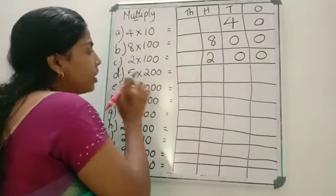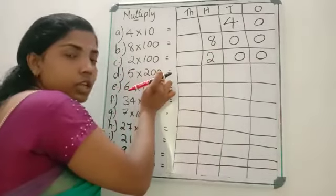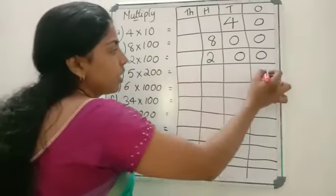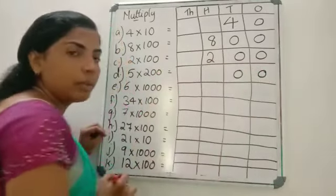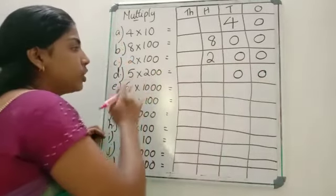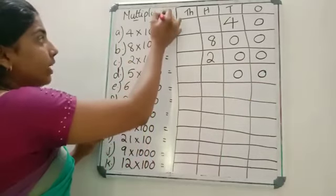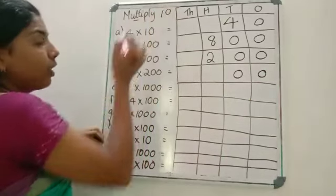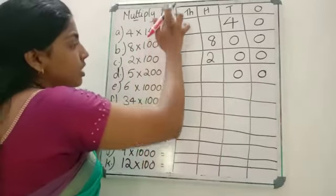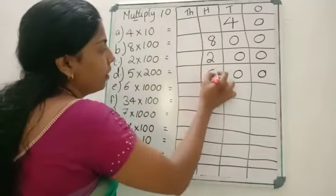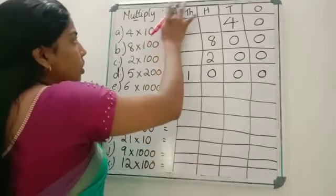Next: 5 into 200. How many zeros? 2 zeros are there. Put those zeros according to the place value. Then 5 into 2 is 10. Be careful while you are writing — first write this 0 here, then 1. So the answer is 1000.